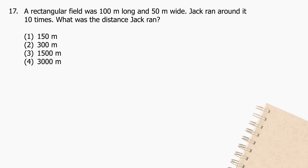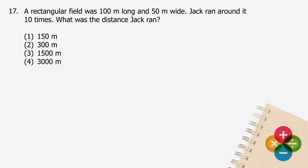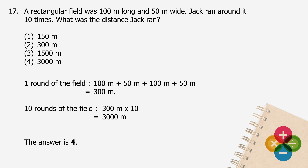Question 17: A rectangular field was 100 meters long and 50 meters wide. Jack ran around it 10 times. What was the distance Jack ran? One round of the field will be 100 m plus 50 m plus 100 m plus 50 m, and the sum is 300 meters. Ten rounds will be 300 meters multiplied by 10, and the product is 3,000 meters. The answer is 4.